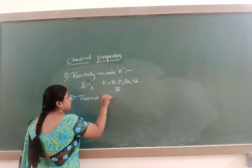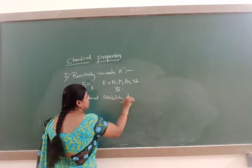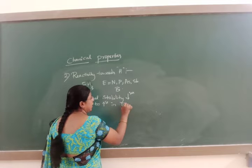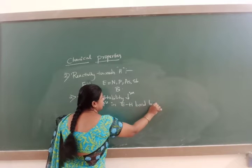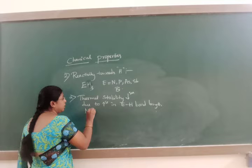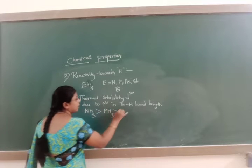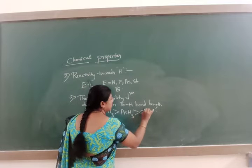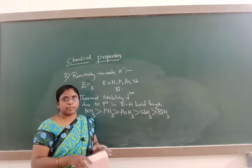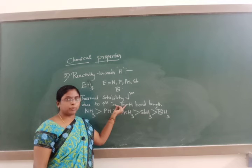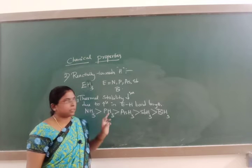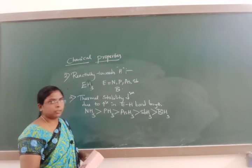Thermal stability decreases due to increase in EH bond length. NH3 is more stable than PH3, than AsH3, than SbH3, than BiH3. As you move from nitrogen to bismuth, the atomic size increases. Due to increase in the atomic size, the EH bond length also increases. Thermal stability decreases from NH3 to BiH3 due to increase in EH bond length.